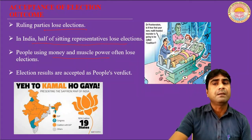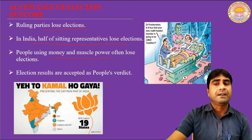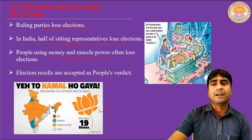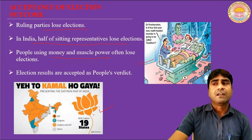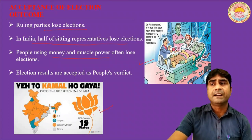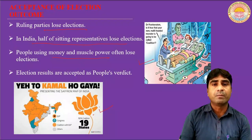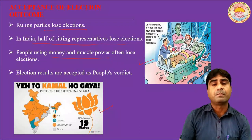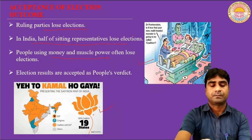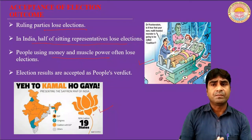Even by using money and muscle power, ruling parties lose the election. We can see on the screen that in the elections of 2019 and 2014, the BJP got full support from the people. The cartoon here shows a person commenting on the ruling party — meaning the acceptance of the election outcome is accepted by the people, the leaders, and the political parties. This is the process of checking the quality of the election process.